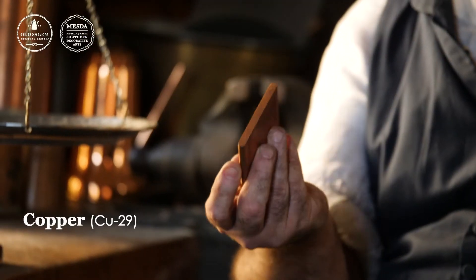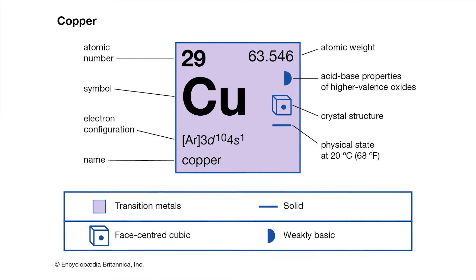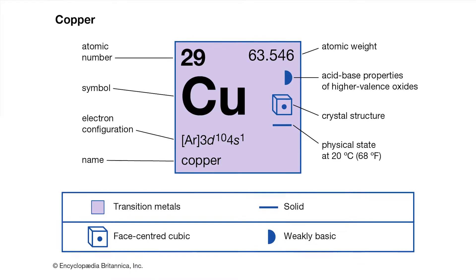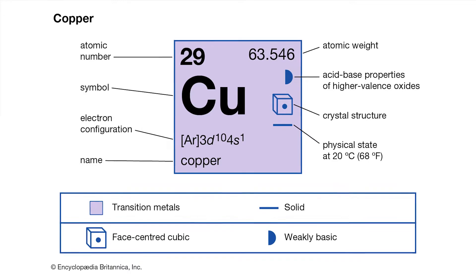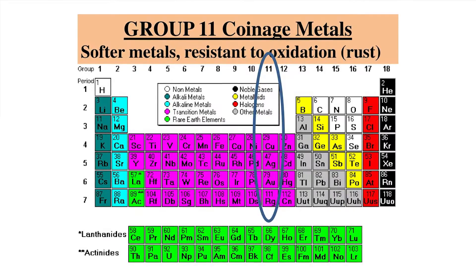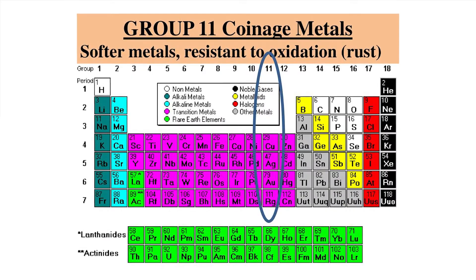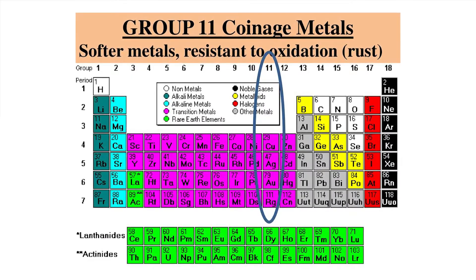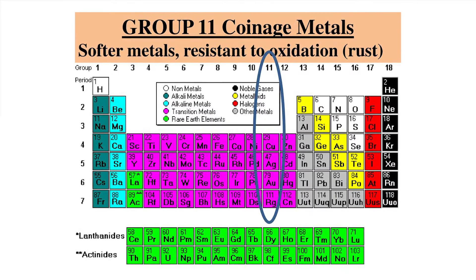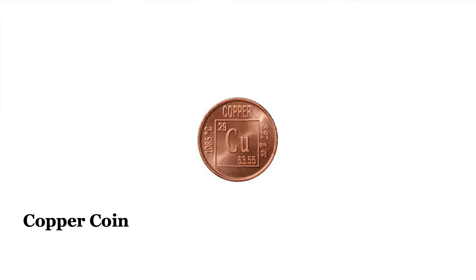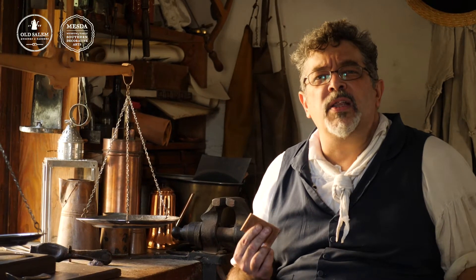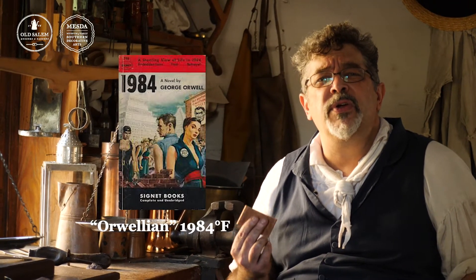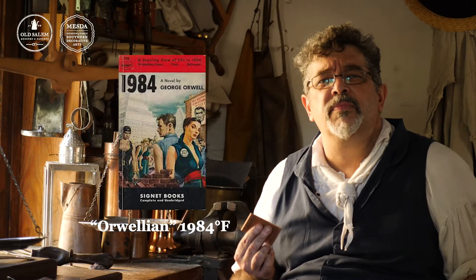Copper only makes up 2% of our pewter but is important for its rigidity. Copper is considered a transition metal and is in the same group as both silver and gold. Typically this group is termed the coinage metals or noble metals for their historical usage. Copper's melting point is an Orwellian 1,984 degrees Fahrenheit.